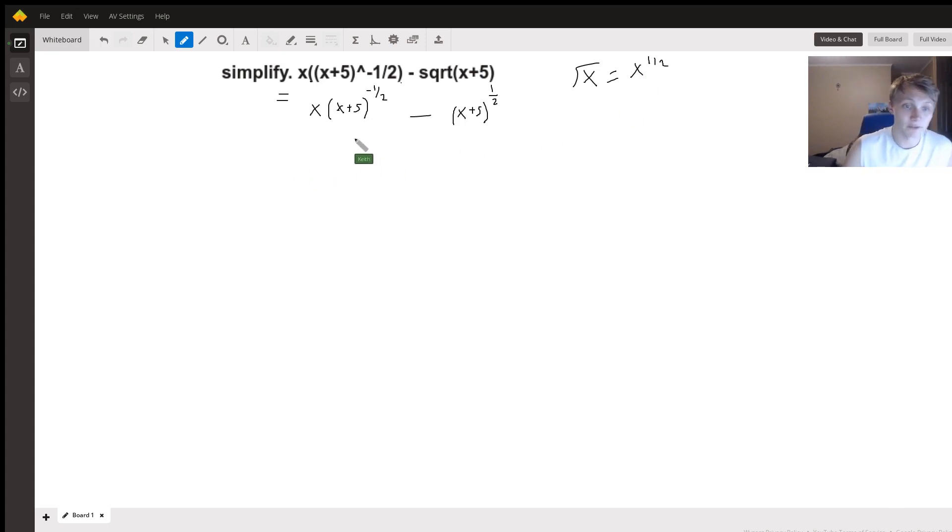And so we're going to keep simplifying this down now. So this is equal to x divided by x plus 5 to the positive one-half, right? And so all that is there is just by definition. x to the negative one over n is equal to one over x to the one over n, but positive that time.